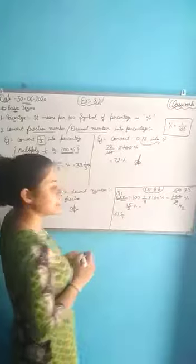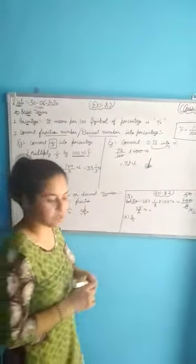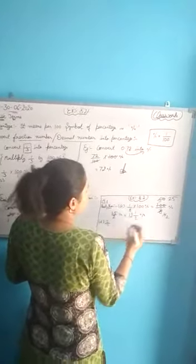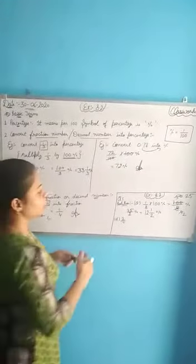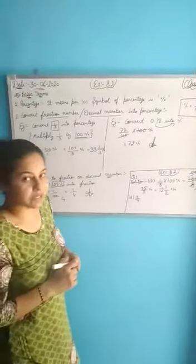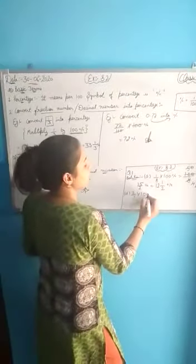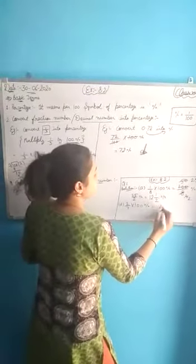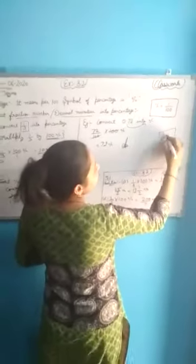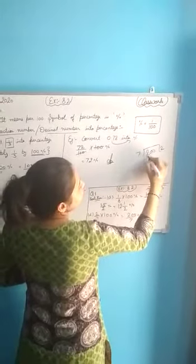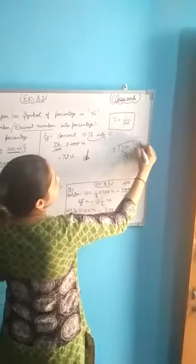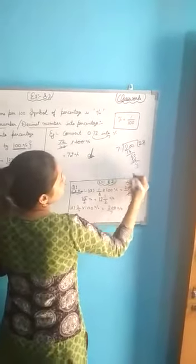Or you can convert 25 by 2 percent, which is an improper fraction, into a mixed number: 2 ones are 2, 2 twos are 4, giving 12 and 1/2 percent. Now for 2 by 7, convert into percentage the same way: multiply 2 by 7 by 100 percent, giving 200 divided by 7 percent. Dividing: 7 twos are 14, remainder 60; 7 eights are 56, remainder 4. So the answer is 28 and 4/7 percent.